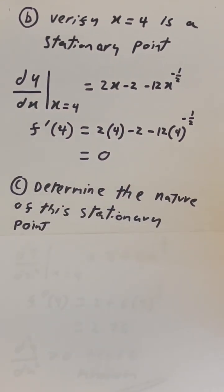Part C is asking us to determine the nature of this point. It's basically asking us: is this stationary point a maximum point, a minimum point, or an inflection point? Let's see how to determine the nature of a stationary point.